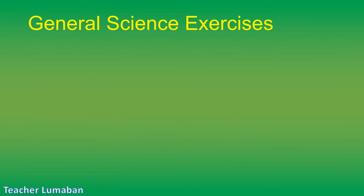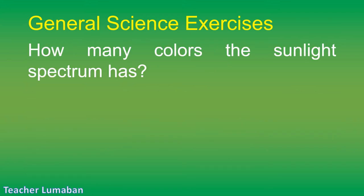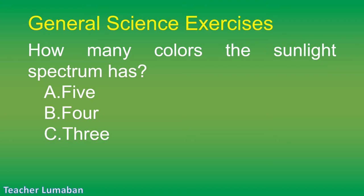How many colors does the sunlight spectrum have? Letter A: 5. Letter B: 4. Letter C: 3. Letter D: 7.